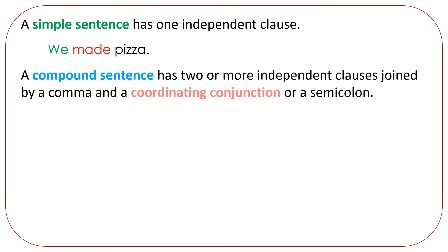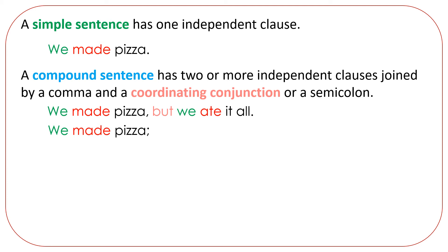A compound sentence has two or more independent clauses joined by a comma and a coordinating conjunction, or a semicolon. We made pizza, but we ate it all. We have the independent clause we made pizza and the independent clause we ate it all, joined with a comma and the coordinating conjunction but. We made pizza; we ate it all. This time we joined the two independent clauses with a semicolon.